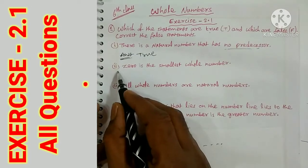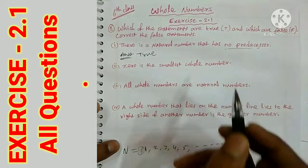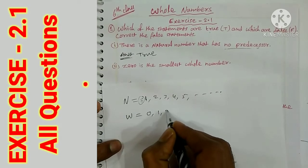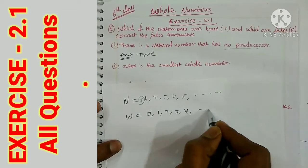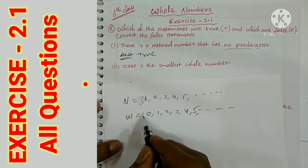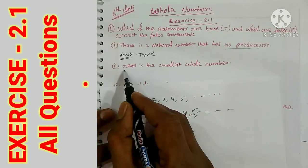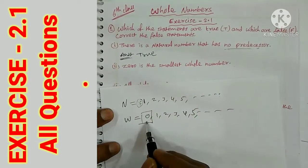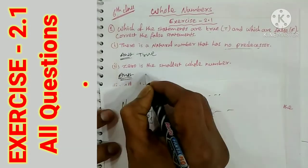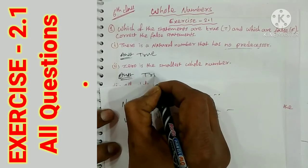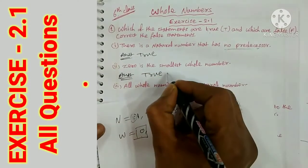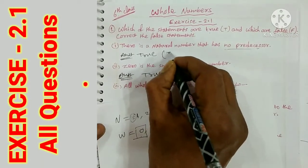Second bit: 0 is the smallest whole number. Whole numbers are 0, 1, 2, 3, 4, 5, and so on. Here 0 is indeed the smallest number, so this statement is also true.